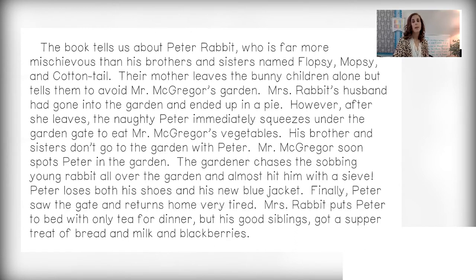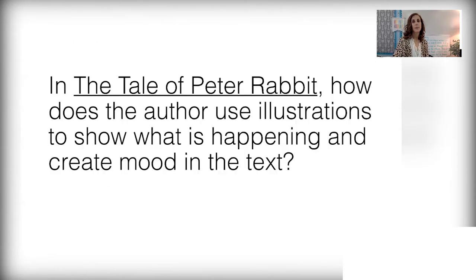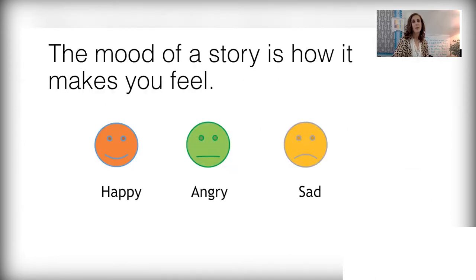Today, our goal is to become better readers by learning how the author uses illustrations to show what is happening and create mood in the text. We will be doing this by looking at and thinking about each picture. The mood is how you feel while you are reading, such as happy, angry, or sad. Authors can set the mood by using words and phrases that get you to feel a certain way. For example, a grandmother baking a homemade apple pie might make you feel happy. When an author puts in a dark stormy night with a haunted mansion, you might feel nervous or even a little scared. Illustrations can help put the reader in the desired mood also.